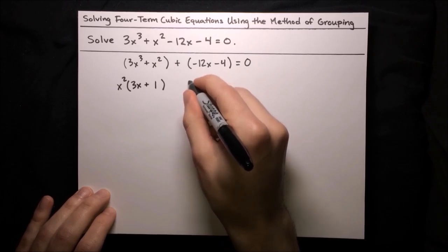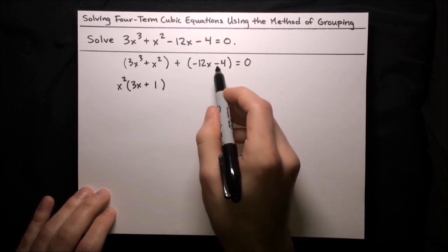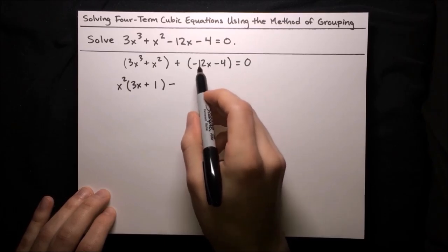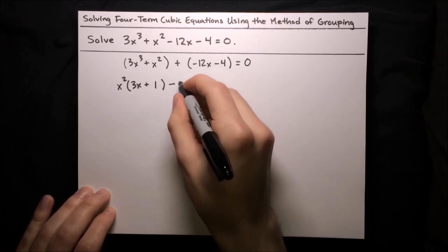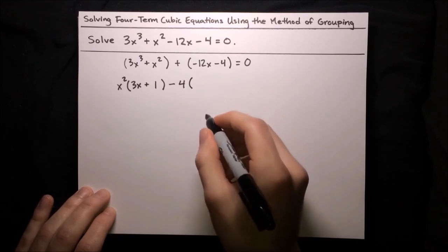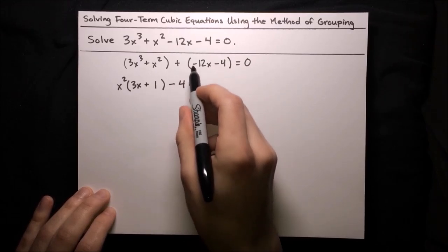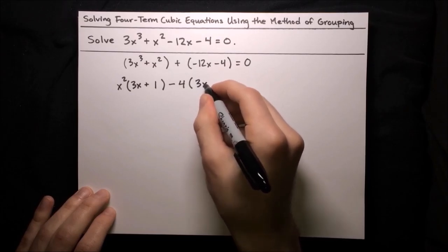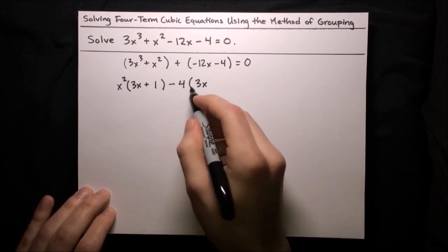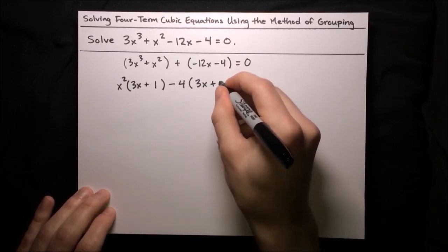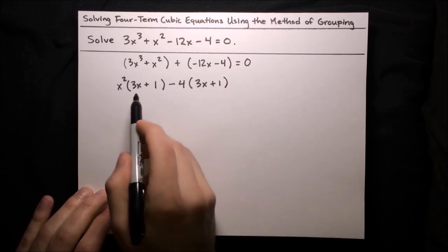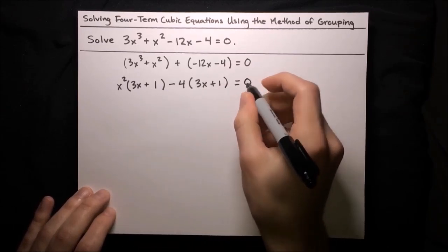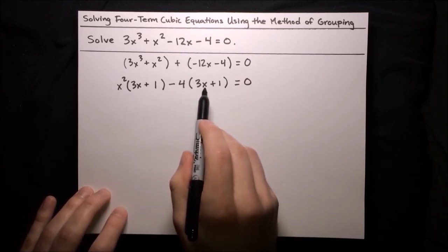Now let's do the same thing for the second group. We can factor out a negative from both terms. Also, 12 and 4 are both multiples of 4, so let's factor out a 4 as well. So negative 4 times 3x gives us negative 12x, and negative 4 times 1 gives us negative 4. So now we've got a common binomial factor: 3x plus 1 in both groups.